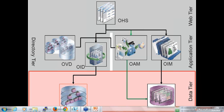In the web layer we have OHS, which is a web server. It can be an iPlanet, it can be an Apache, or several other things, but it should be a web server. In the application layer — also referred to as the directory layer — the components mainly configured are OVD (Oracle Virtual Directory), OID (Oracle Internet Directory), OAM (Oracle Access Manager), and OIM (Oracle Identity Manager).